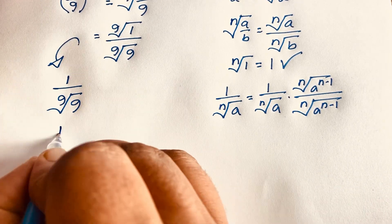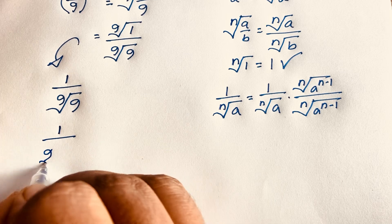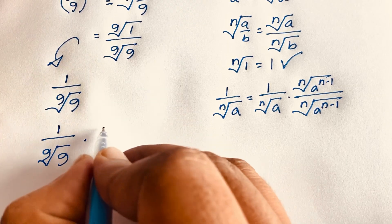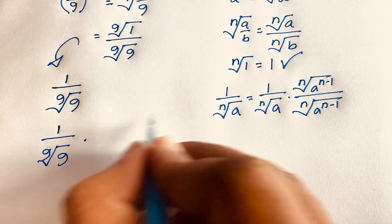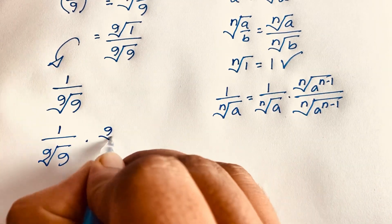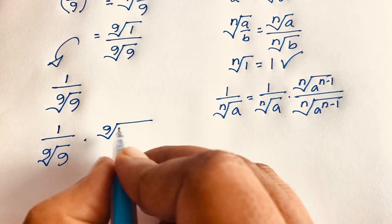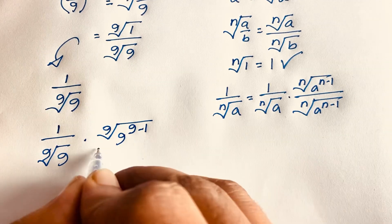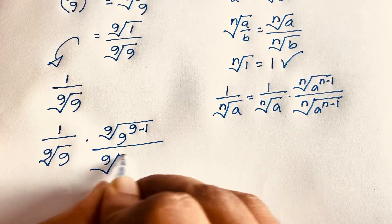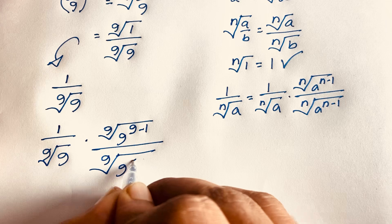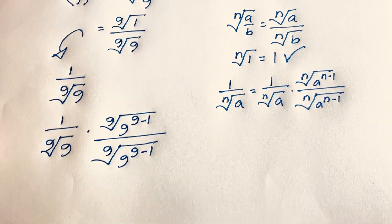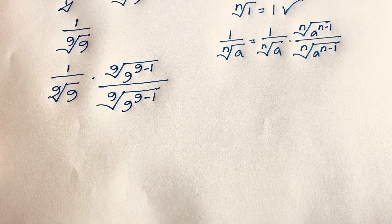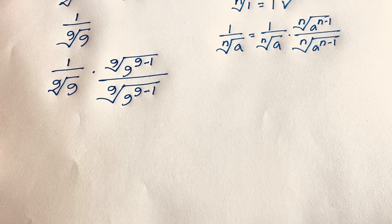— I can say easily this value will be 1 over the 9th root of 9, times the 9th root of 9 to the power (n−1), where n is 9, so that is the 9th root of 9 to the power (9−1). Now I apply this rule in this expression.